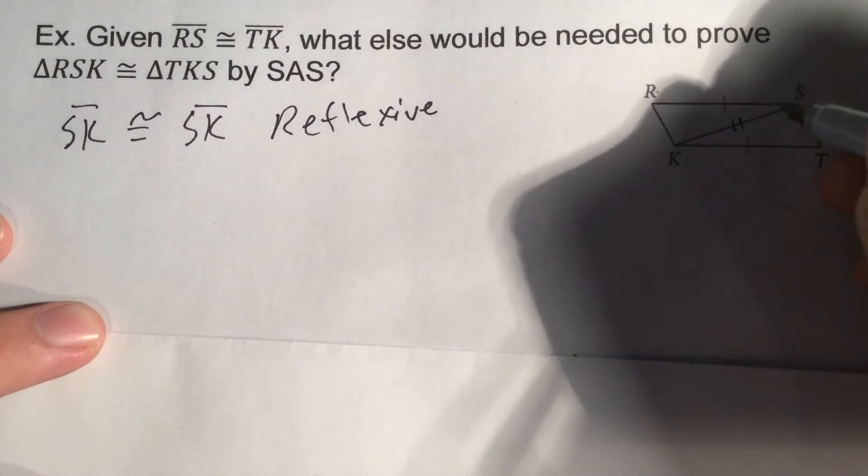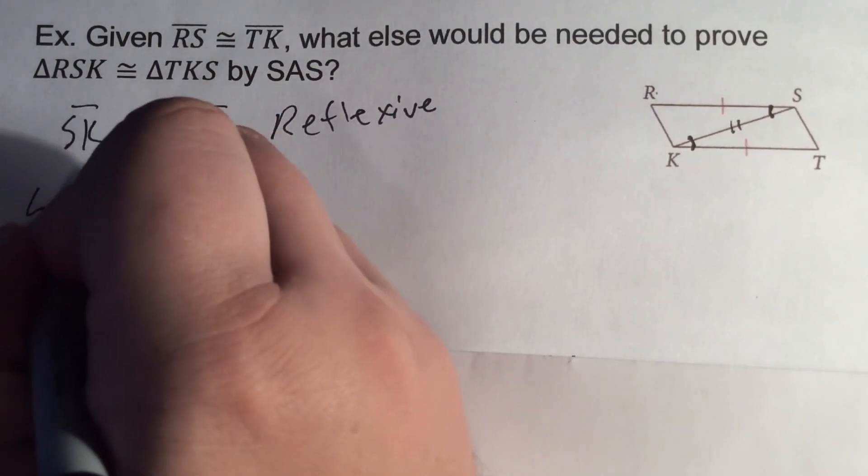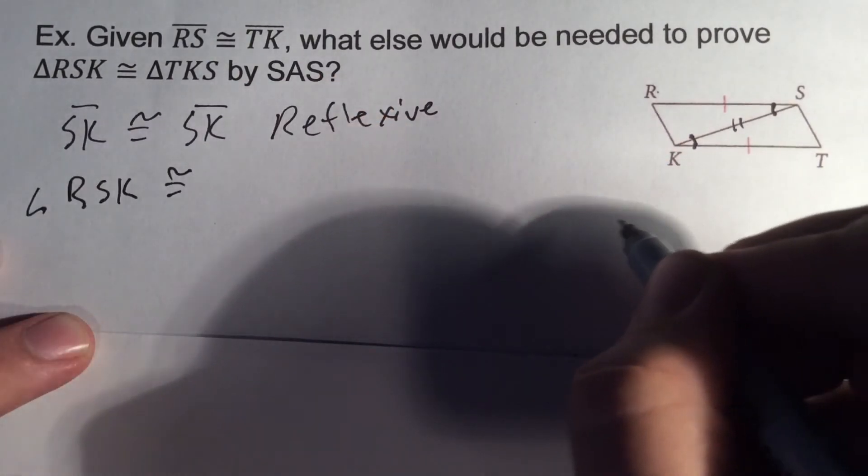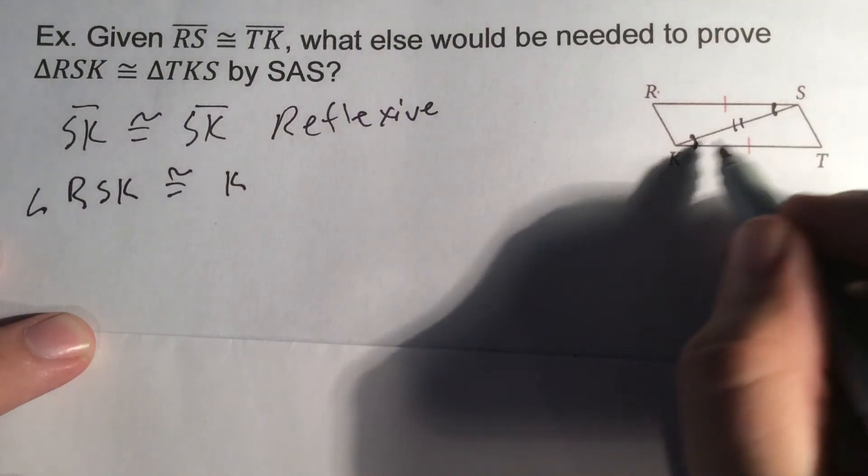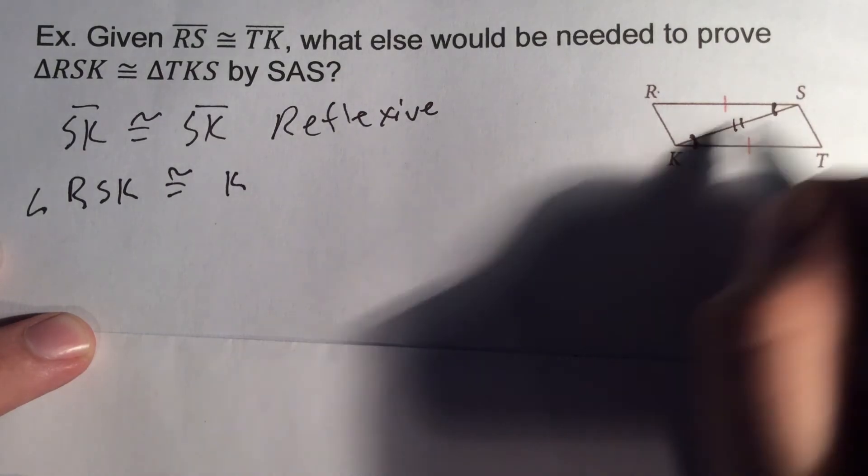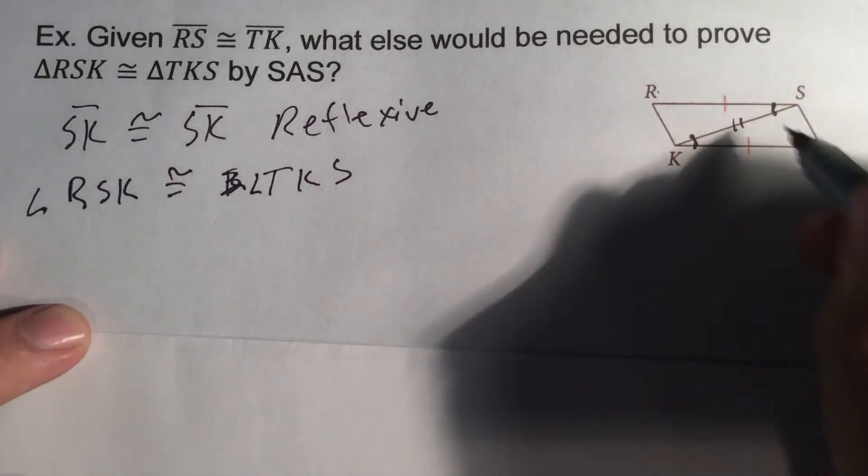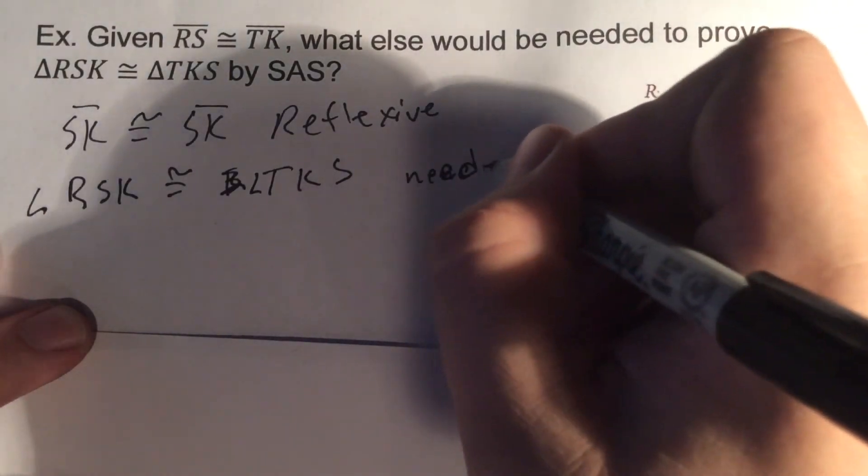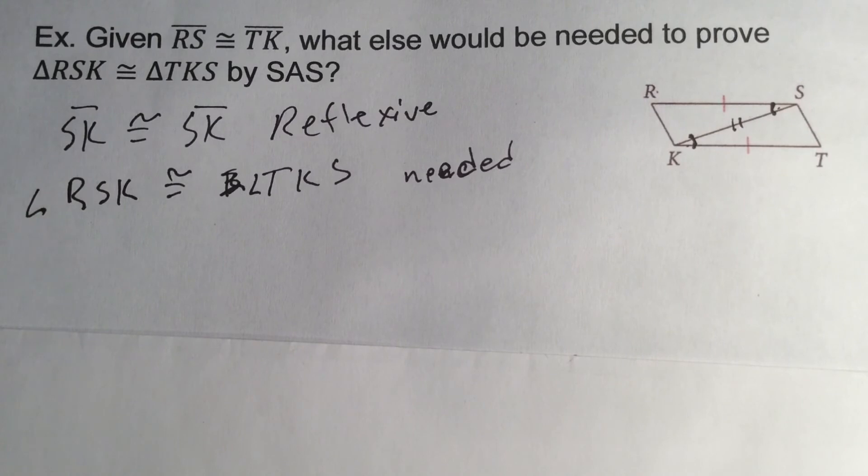So we really have two sets of sides here. Now we just need the angle in between. The angle we're talking about is this angle and this angle. So we would need angle RSK to be congruent with angle TKS. We need this angle, we need this angle. So we're going to say needed. We can look and tell this is true. So the only thing we really need is to know that these two angles are congruent. Then we can use side-angle-side.